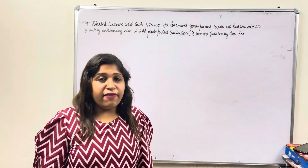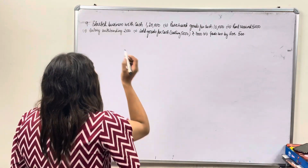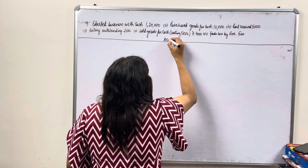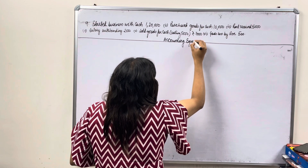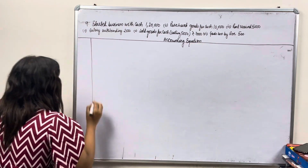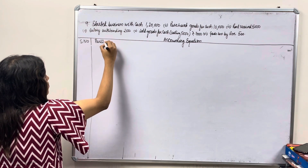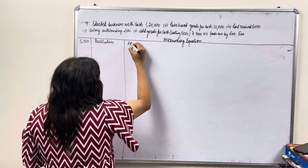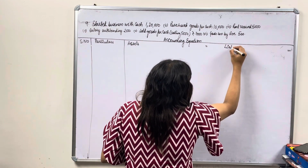Class 11 accounting equation question number 9. We will make the format for the accounting equation. The columns are: serial number, particulars, assets equals liabilities plus capital.